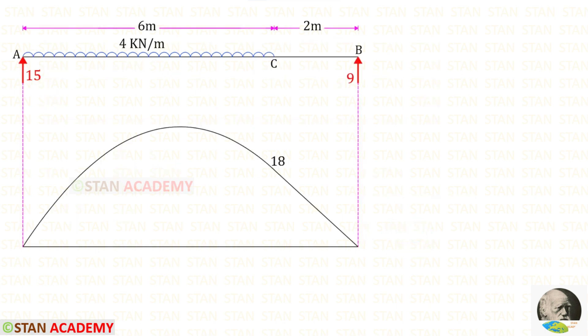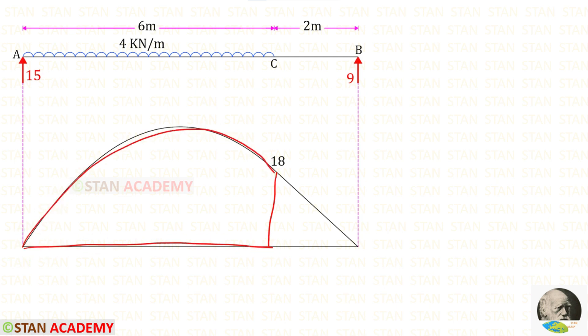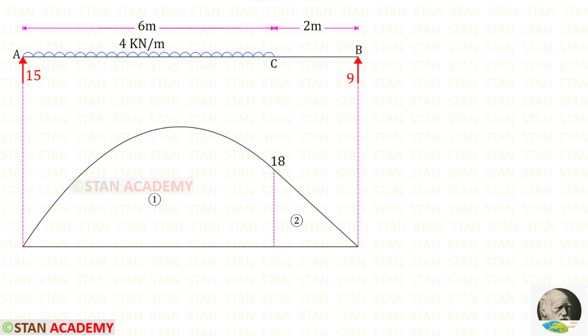Now for the simply supported beam we have to draw the bending moment diagram. At point C we have to find the ordinate: 9 × 2 gives us 18. In this diagram there are two different parts — the first one is the parabola, which we will call part 1, and then we have a triangle, which we will call part 2.